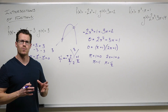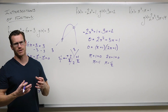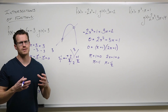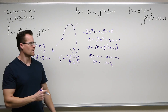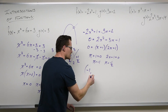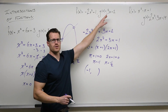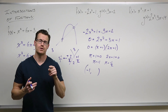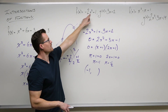Now there is one thing we want to make sure that we do — we don't want to leave it just as x values. Whenever you're finding intersections, we want to leave them as points. So to do that, I'm going to plug in negative 1 into both of my functions. Is that necessary? No, but it's a good idea so that we can check our work.